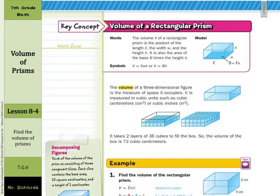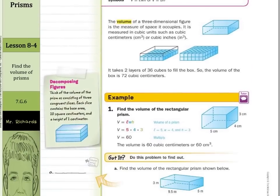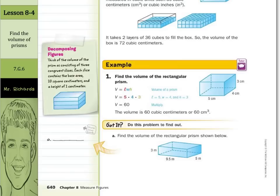In our guided example: find the volume of the rectangular prism. Well, volume equals length times width times height. Five times four times three is 60.